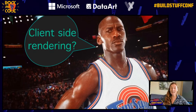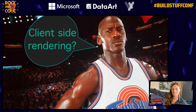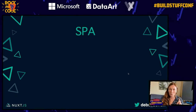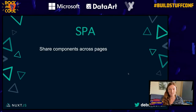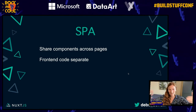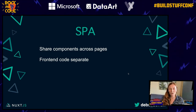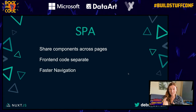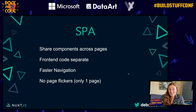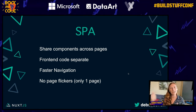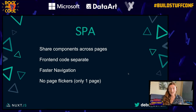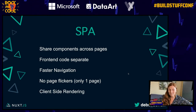Client-side rendering — that's exactly what the front-end did then. Let's just do client-side rendering, get away from the back-end, put everything on the client. Great solution — that's a single-page application. You can share components across pages, front-end code is separate, I'm in my own world. Faster navigation because it's all on the client — not going to a server. No page flickers because there's only one page. Rendering on the client in the browser.